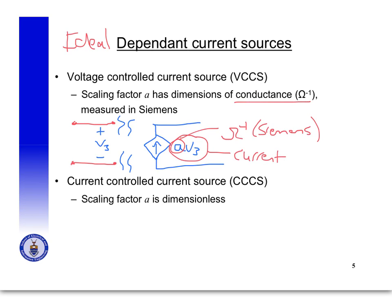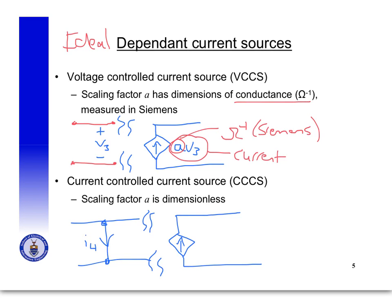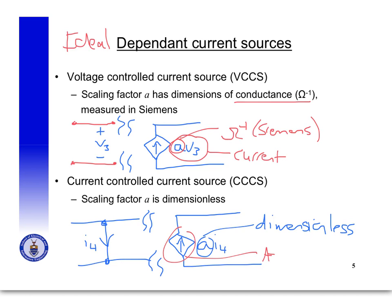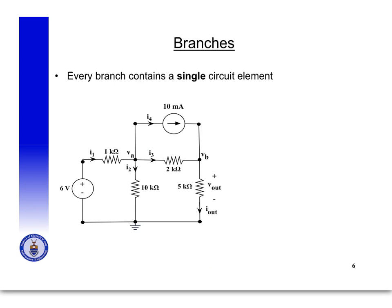We can also get a current-dependent current source. If we have a current I4 flowing somewhere in the circuit, and then we have a current source that depends on that current I4 with a scaling factor, we can see that in this case the scaling factor is again dimensionless, because the current flowing in that current source must be measured in amps — it is a current, after all.